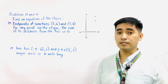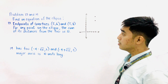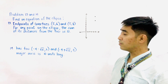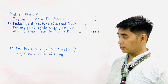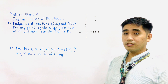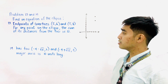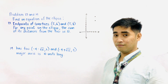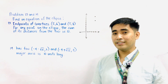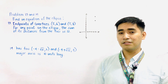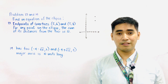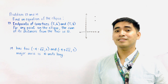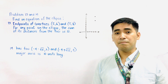For problem number 13, find an equation of the ellipse having endpoints of co-vertices located at (5, 6) and (5, 8). That is the first condition. The second condition is for any point on the ellipse, the sum of its distances from the foci is 12. If we are given this condition with endpoints, the best thing we need to do is to plot it first, so that we will be able to analyze the major and the minor axes.